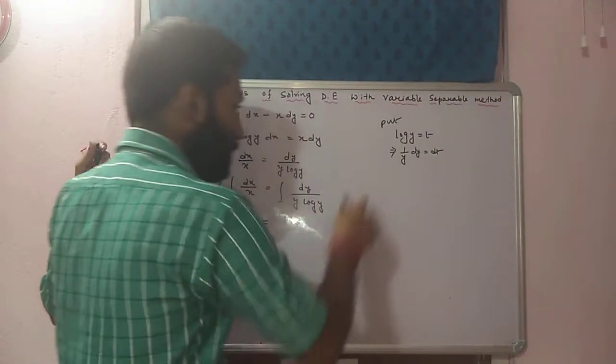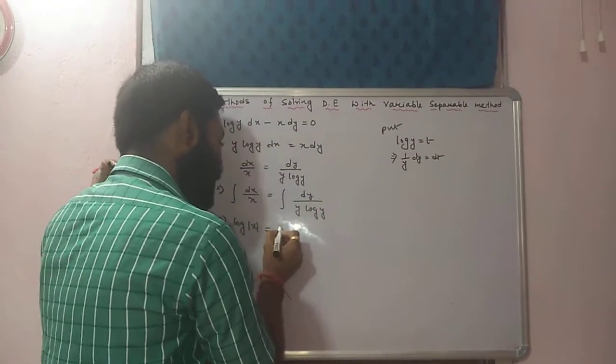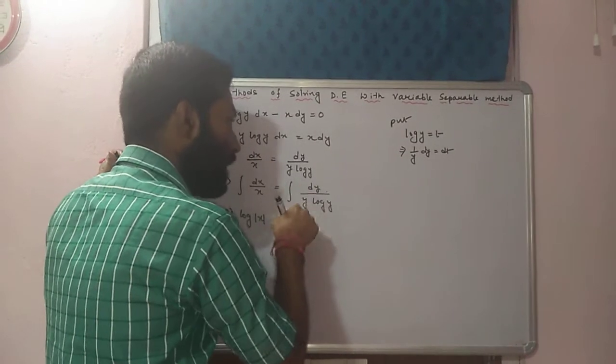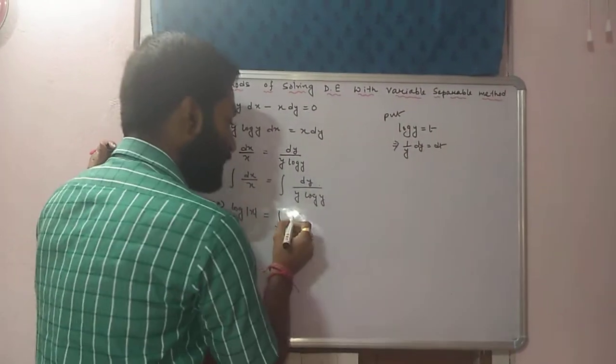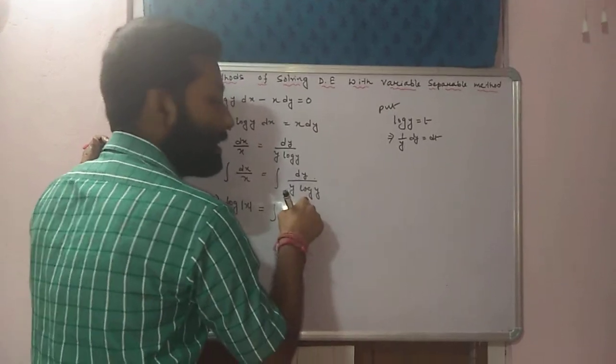So, चलो हो गया, substitution method ही use करना परेगा. It is confirmed on the right hand side. So, integration dy by y. dy by y के जगे में क्या लिख सकते है? dt divided by t.